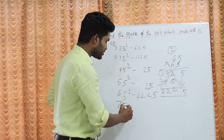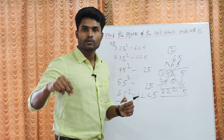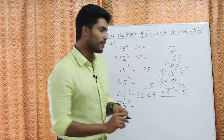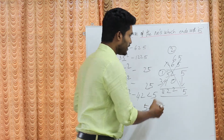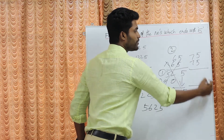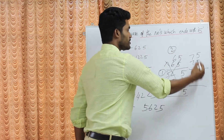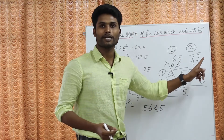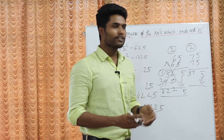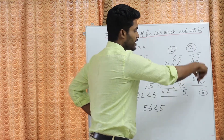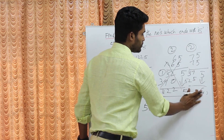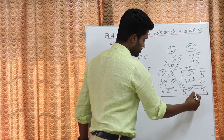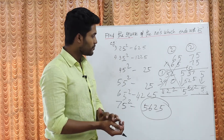Now tell me — what is 75 square? Your time starts now: 3 seconds. 75 square is 7 into 8, and 7 eights are 56, so the answer is 5625. Let's verify: 75 into 75. 5 fives are 25, 5 sevens are 35, plus 2 is 37. Then 7 into 5 is 35, 7 into 7 is 49, plus 3 is 52. Adding up: 5, 6, 2, 5. Our answer is confirmed: 5625.